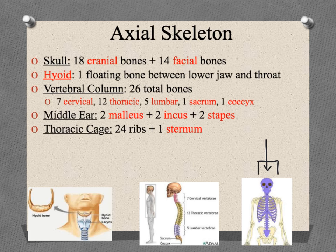One bone that a lot of people don't even know exists is called the hyoid — it's found between the lower jaw and the throat. Then we get to the vertebral column, or spine. You have 26 total vertebrae: the first seven are the cervical vertebrae, the next 12 are the thoracic vertebrae running along the rib cage and chest cavity, the next five are lumbar or lower back vertebrae, and then the bottom two are the sacrum — the big triangular-shaped tailbone — and the coccyx, the curved piece at the bottom.